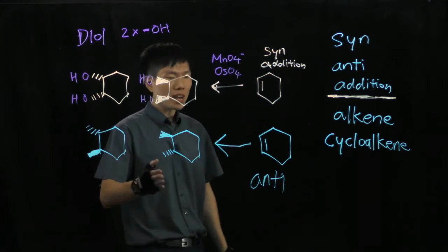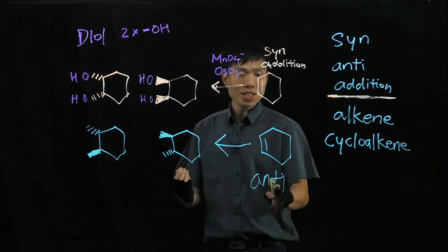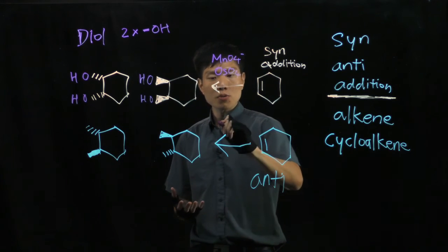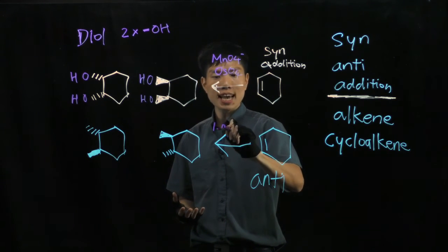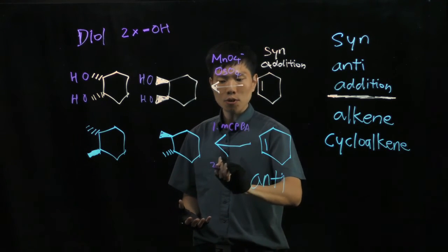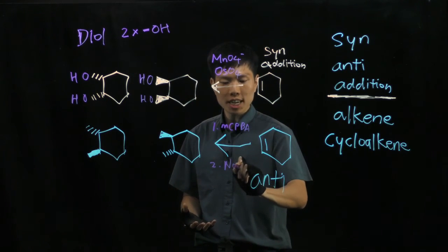To make a transdiol, which is the anti-addition, we need to use an epoxide first. So to make an epoxide, we need to use step 1, which is MCPBA, followed by sodium hydroxide.